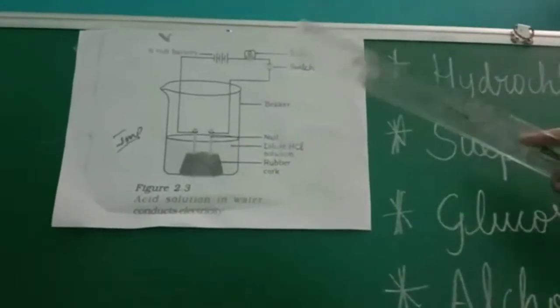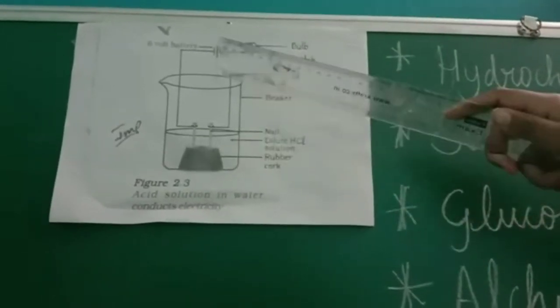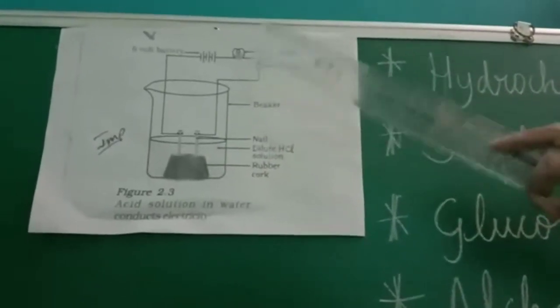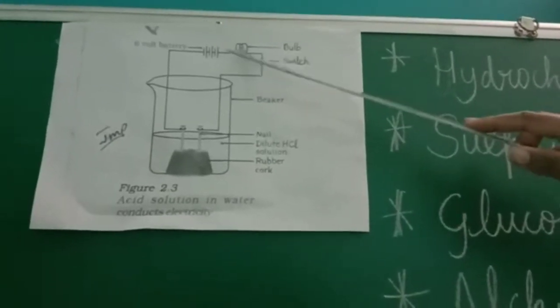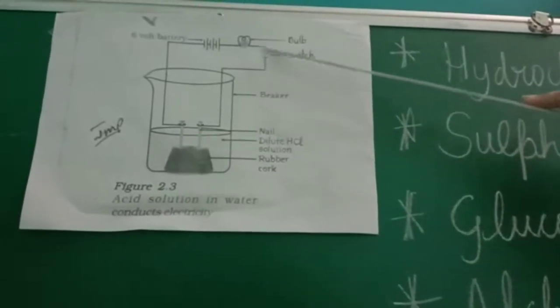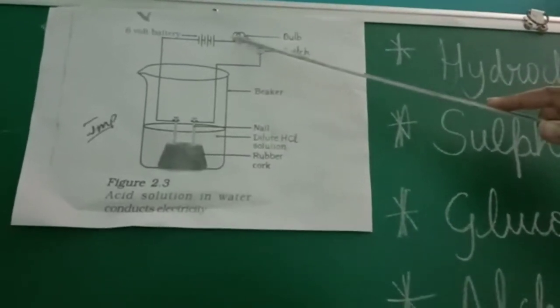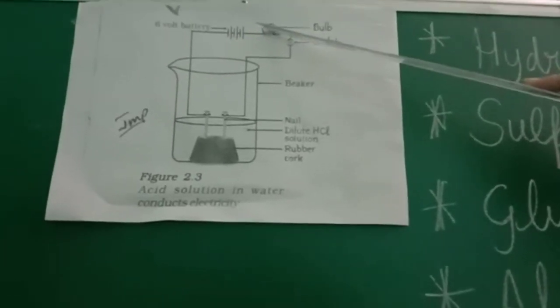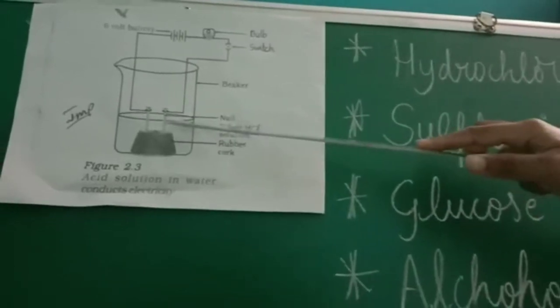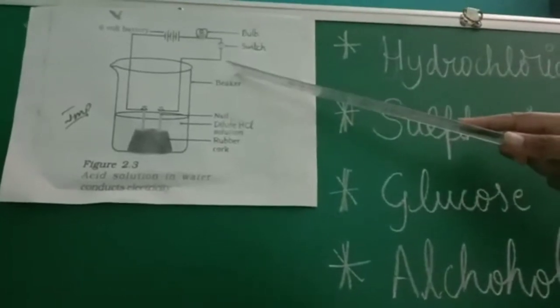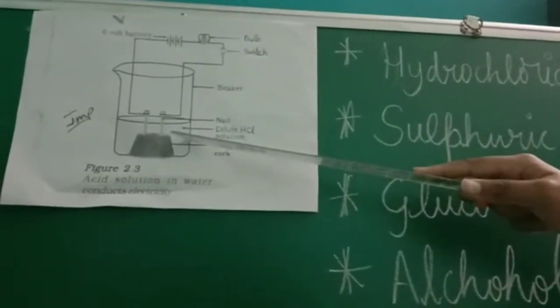Once the wire is connected, immediately the current starts flowing. So how can you say that current is flowing? Whenever the current flows and reaches the bulb, immediately the bulb starts glowing. So if the bulb glows, automatically we can say that because of this hydrochloric acid, the bulb starts glowing — meaning electricity is generated in this solution.